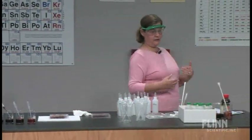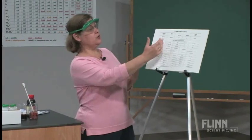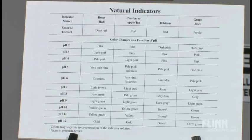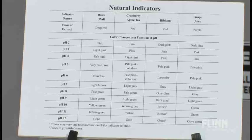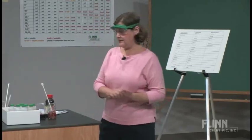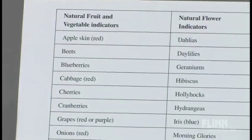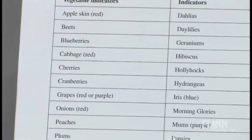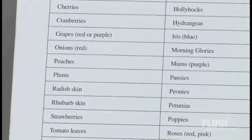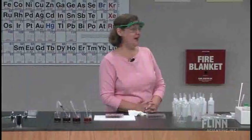I've summarized on the easel the color changes for the four indicators we looked at: roses, cranberry apple tea, hibiscus, and grape juice. On the back side I've summarized all the different things we tested. Natural fruit and vegetable indicators that gave good results include: red apples, beets, blueberries, red cabbage, cherries, cranberries, red or purple grapes, red onions, peaches, plums, radish skin, rhubarb skin, strawberries, tomato leaves, and turnip skin. We tested all of these — we had fun that week.